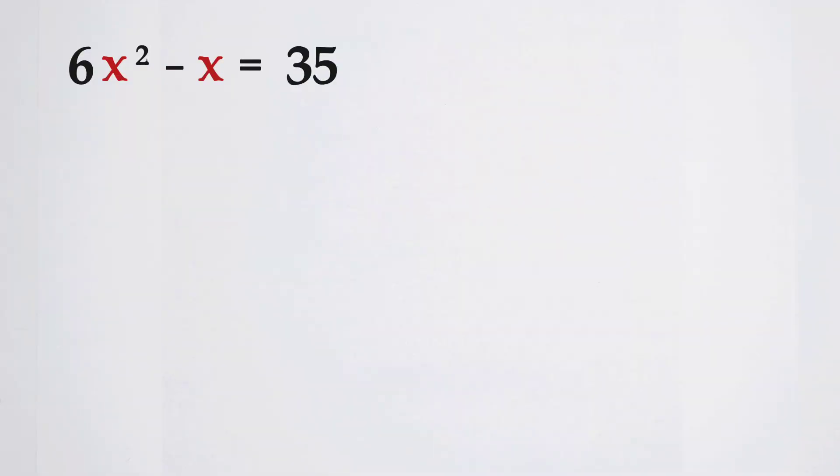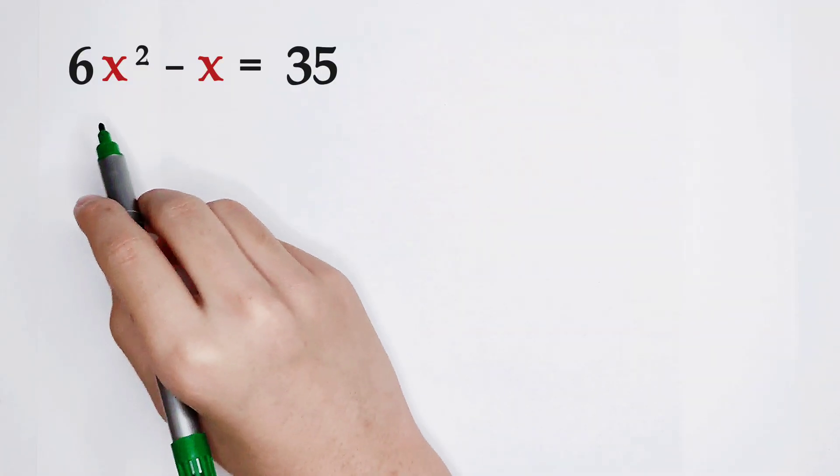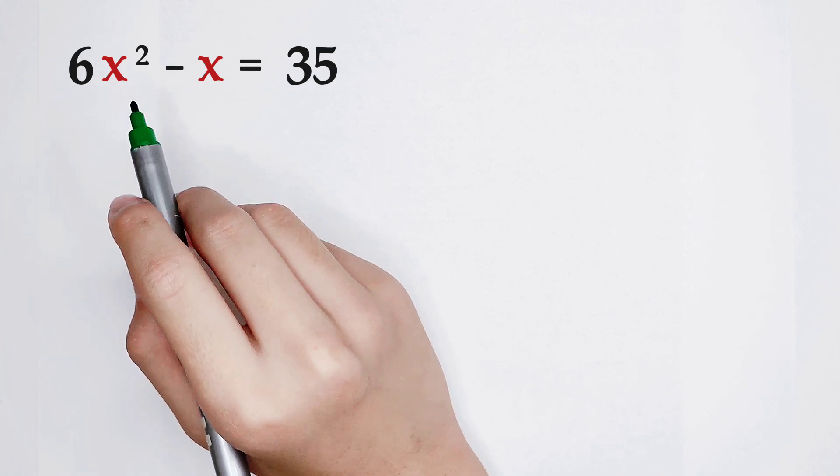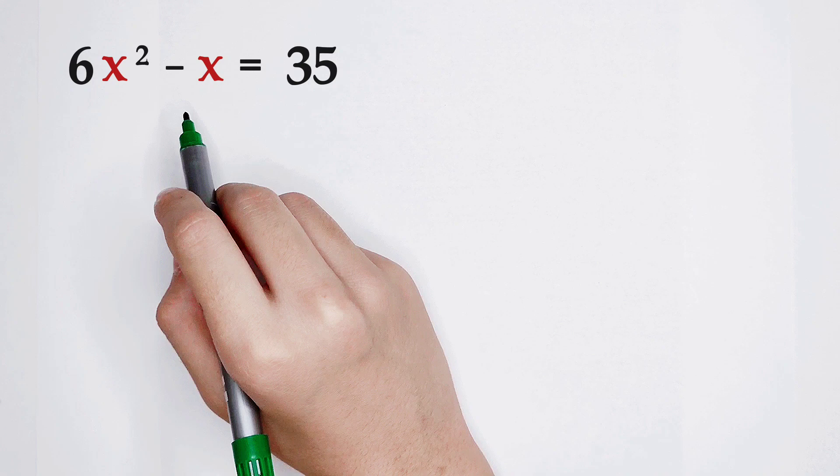Welcome to Math Winnow. Solve the value for x from this equation: 6 times x squared minus x equals 35. How can you solve it?